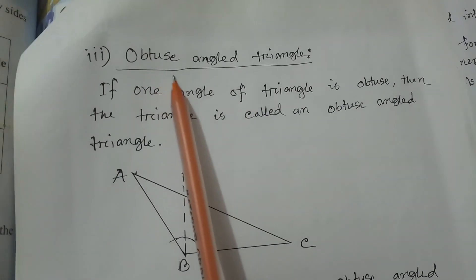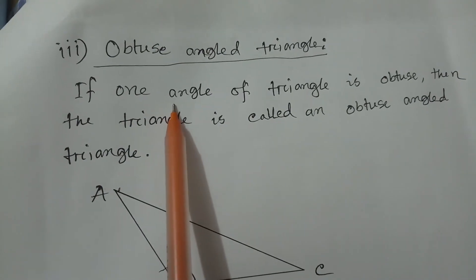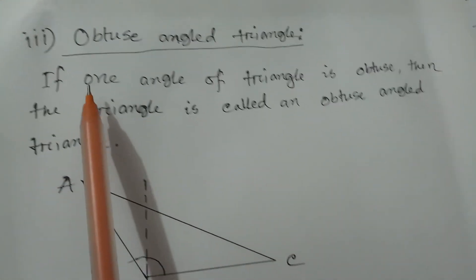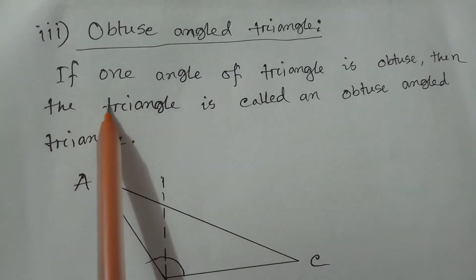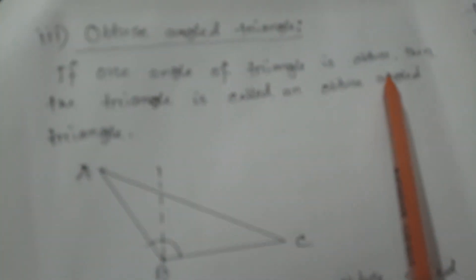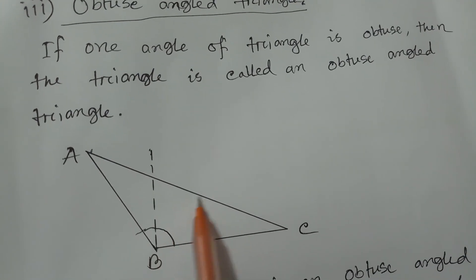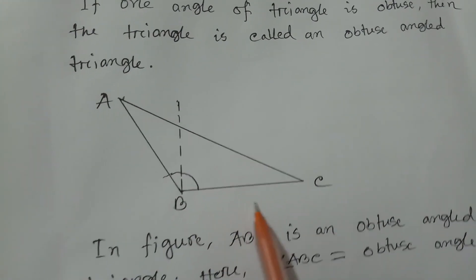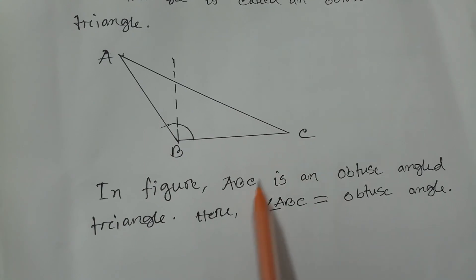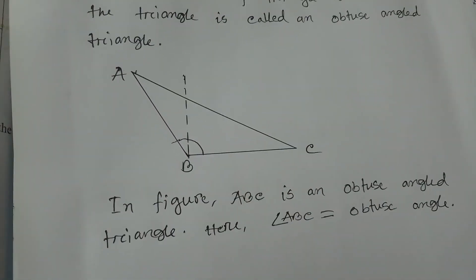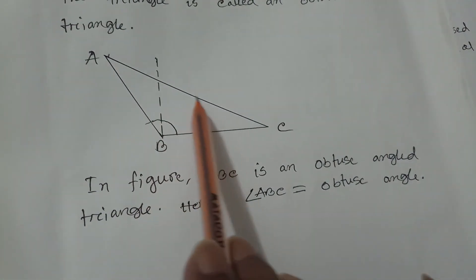The last one is obtuse angle triangle. The definition of obtuse angle is: if the measure of an angle is greater than 90 degrees, this angle is called an obtuse angle. If one angle of a triangle is obtuse — that means if one angle is greater than 90 degrees — then this triangle is called an obtuse angle triangle. In figure, ABC is an obtuse angle triangle, where angle ABC equals an obtuse angle.